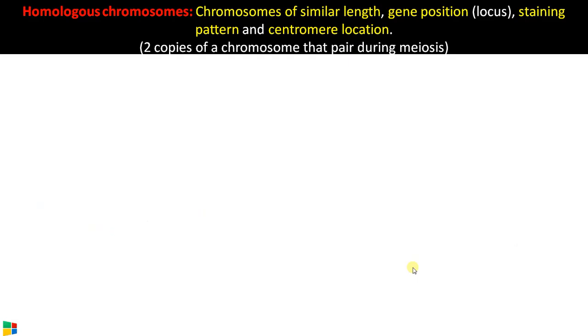Starting with the definition of homologous chromosomes. Homologous chromosomes are chromosomes that have similar length, same gene position, same staining pattern, and same centromeric location.